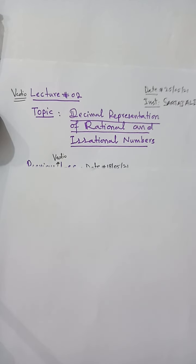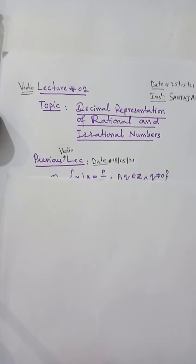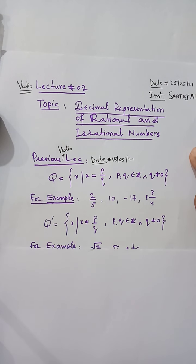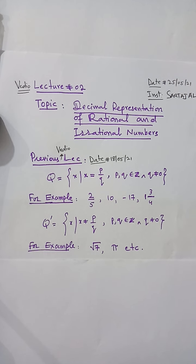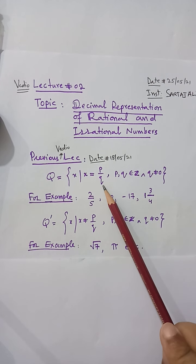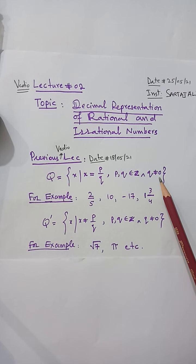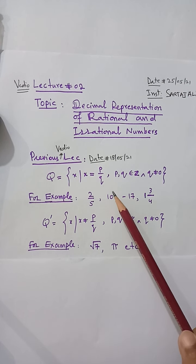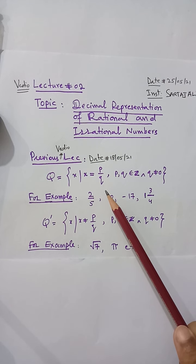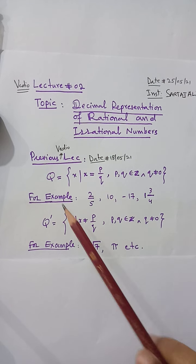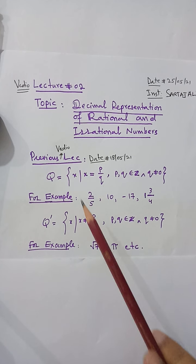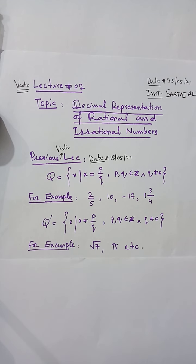In the previous video lecture we discussed rational and irrational numbers. By defining them in set-builder notation form: if a number is written in the form p/q, where p and q belong to integers and q is not equal to 0, then such numbers are called rational numbers. The set of rational numbers is denoted by Q.